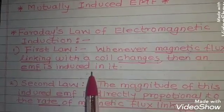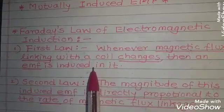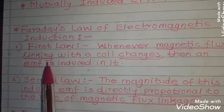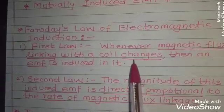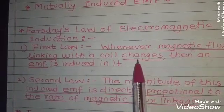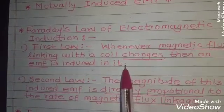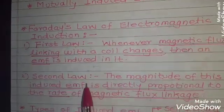There must be magnetic flux linking and it must change with a coil, then only EMF is induced in that coil. Now the second law, the second law states that the magnitude of this induced EMF is directly proportional to rate of magnetic flux linkage.